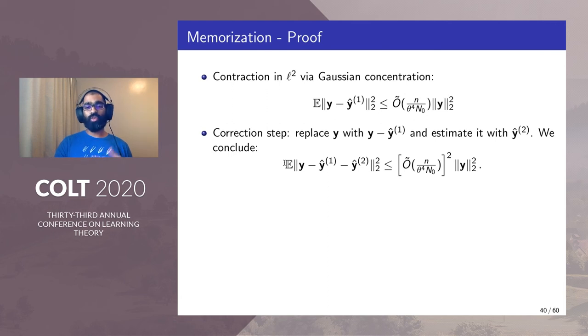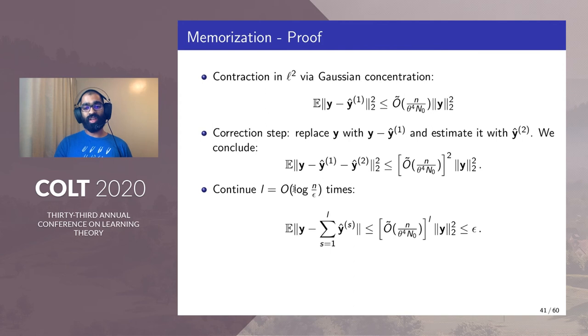We don't have to stop after two steps we can continue it for log(n/ε) steps and then we show via simple arguments that the expected error in the final label is at most ε.